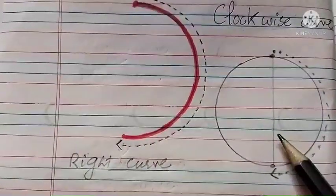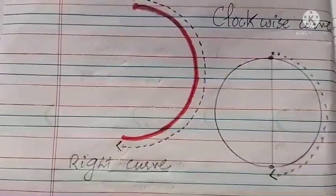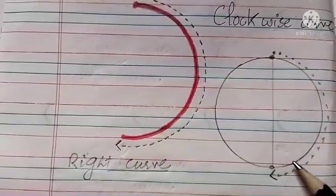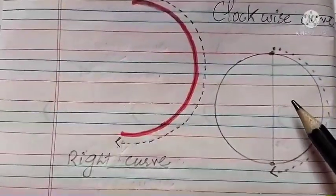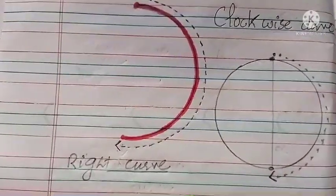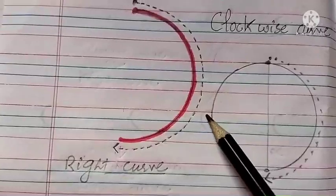I will explain how we call it right curve. We will make a circle. Like here, I have made a circle. I have made two pieces. This is right and this is left.